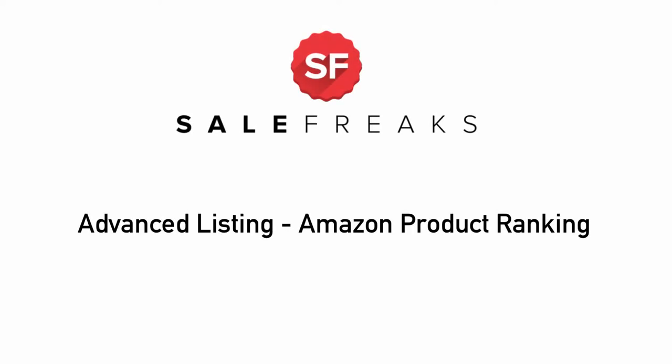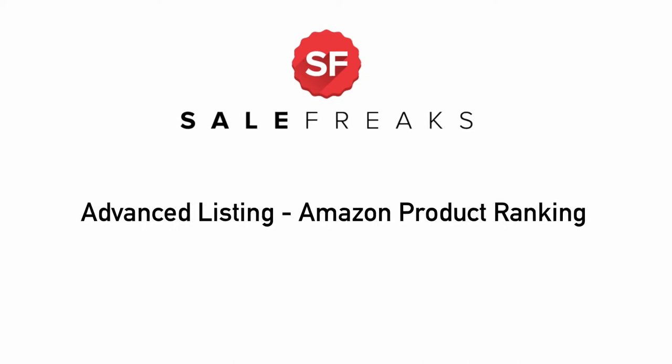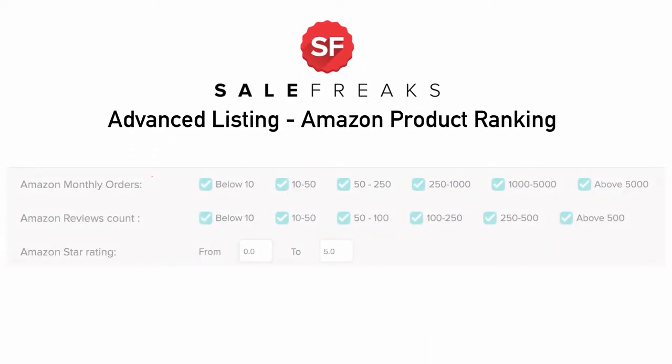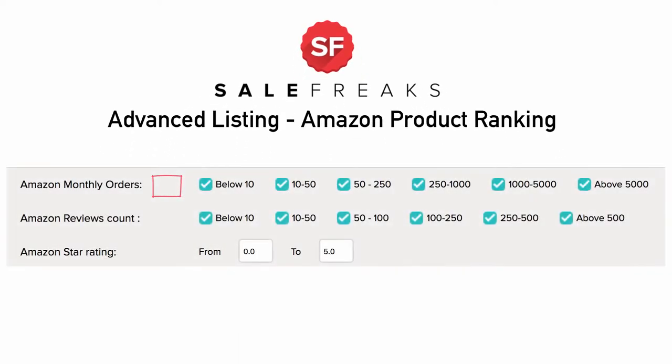This video covers Amazon Product Ranking filters in the Locator and Listing Wizard tools. The Amazon Product Ranking gives you three new types of filters to narrow down your search: Monthly Order, Review Count, and Star Rating.